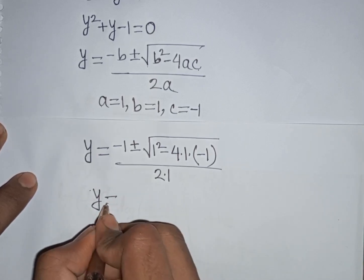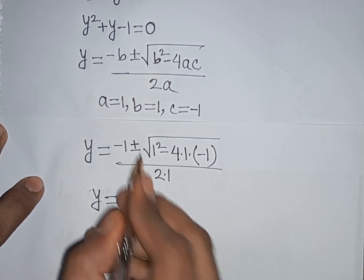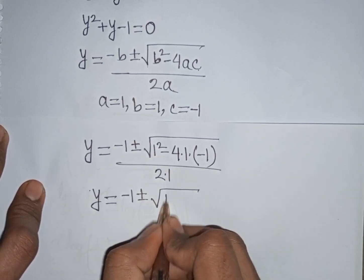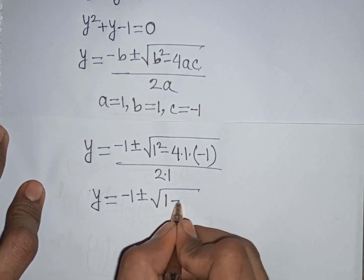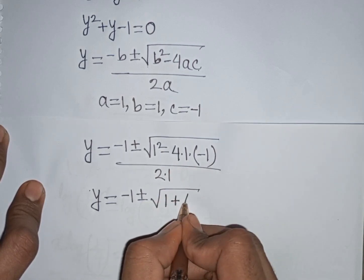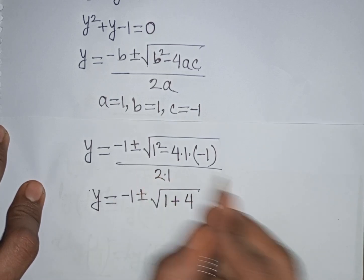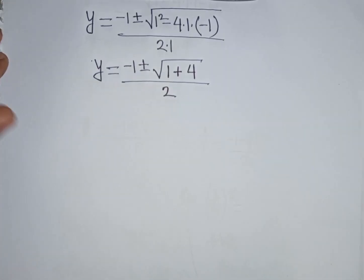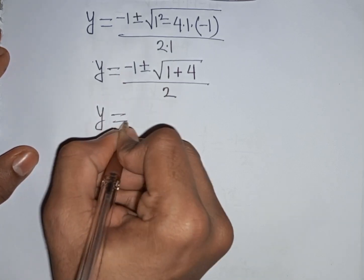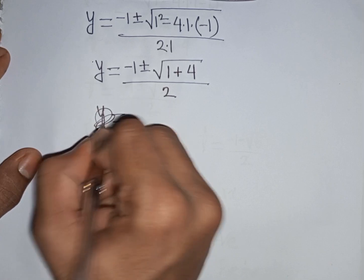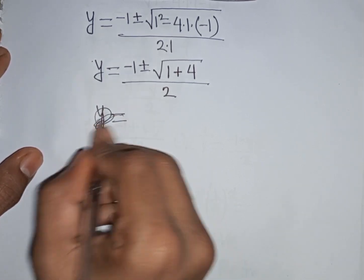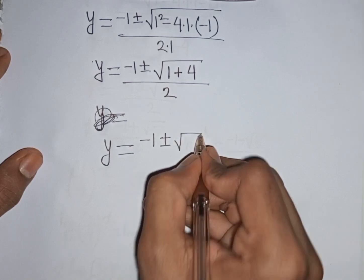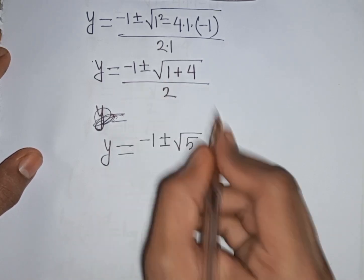This simplifies to y equals minus 1 plus or minus square root of 1 plus 4, divided by 2. Since 1 plus 4 equals 5, we get y equals minus 1 plus or minus square root of 5, divided by 2.